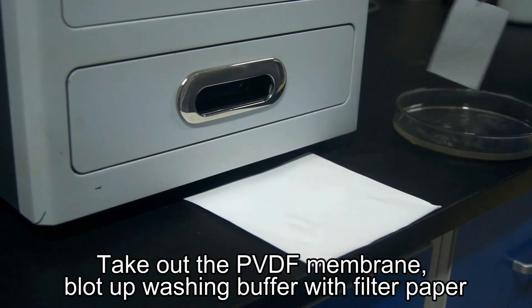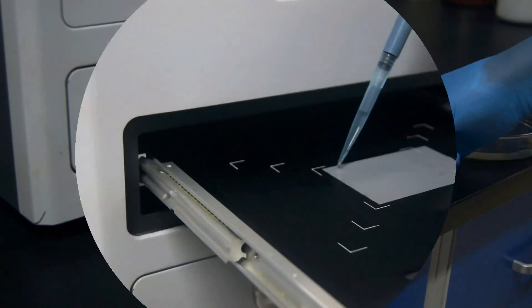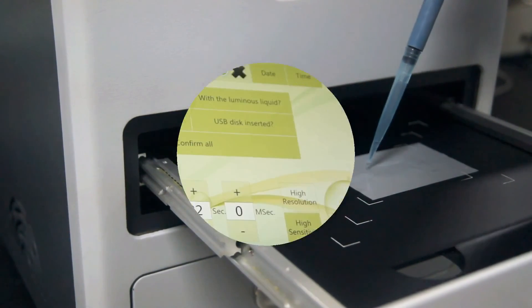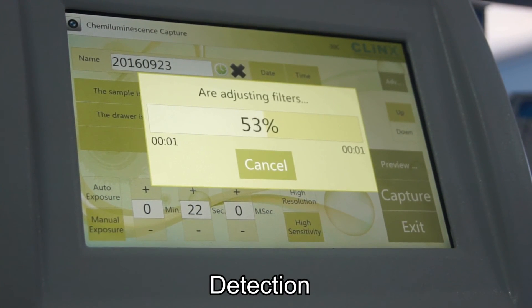Take out the PVDF membrane and blot the washing buffer up with filter paper. Cover the blotting membrane with mixed substrate for 1 to 5 minutes. Then observe the fluorescence in darkness with the detection machine.